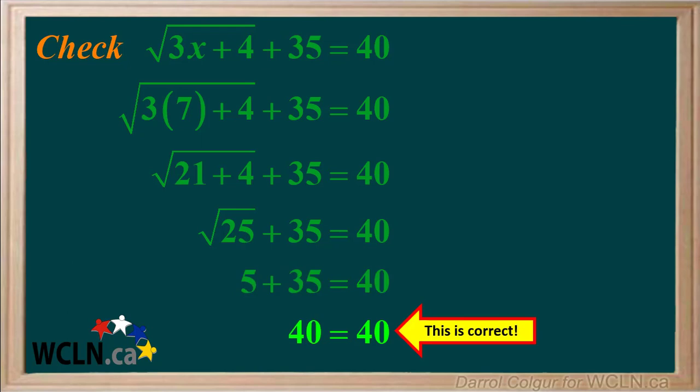We end up with 40 equals 40. So 7 is the correct solution when we solve this for x.